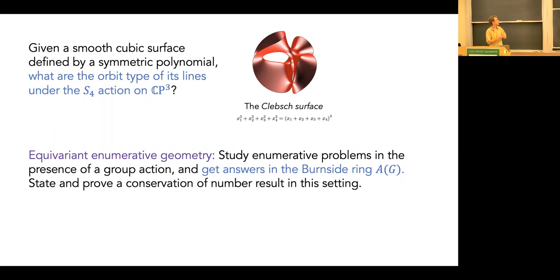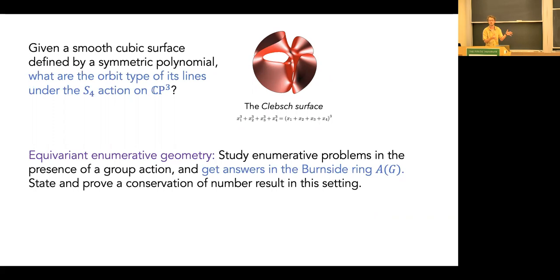The goal is to state a conservation of number result in this setting, saying whatever the class is, it doesn't depend on the cubic surface — only on the ambient symmetry. These symmetric objects are natural to study: we fix one coordinate to take an affine chart and graph the real points, and the symmetry tells us all affine charts look the same. Most of the objects we like to visualize are symmetric, so this is a very natural thing to look at.